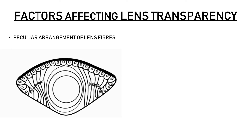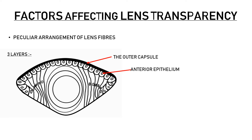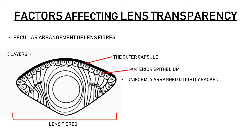First is the peculiar arrangement of lens fibers. The lens is made up of three layers: the outer capsule, the anterior epithelium, and the lens fibers. The lens does not have a posterior epithelium because during embryological development, the posterior epithelium gives rise to the primary lens fibers. Lens fibers fill up the entire cavity of the lens and are uniformly arranged and tightly packed.